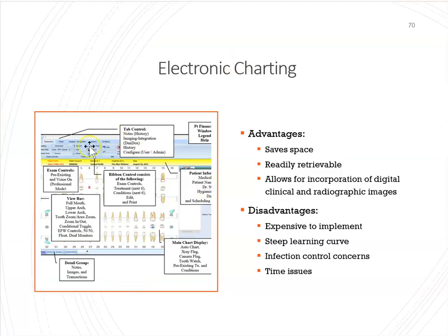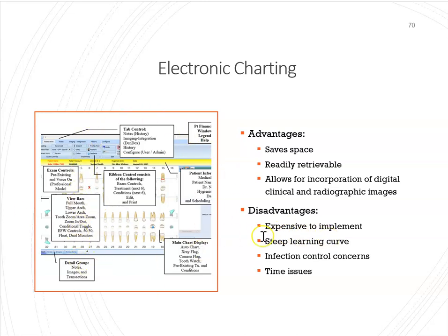Electronic charting is a great option because it saves space in your office. It is readily available and allows for incorporation of digital radiographic images. You could use the intraoral camera and incorporate that into the file. Same with digital radiographs — you can incorporate it all in one electronic file. However, the downside is it is expensive and there is a learning curve. More and more offices are switching to electronic charting.